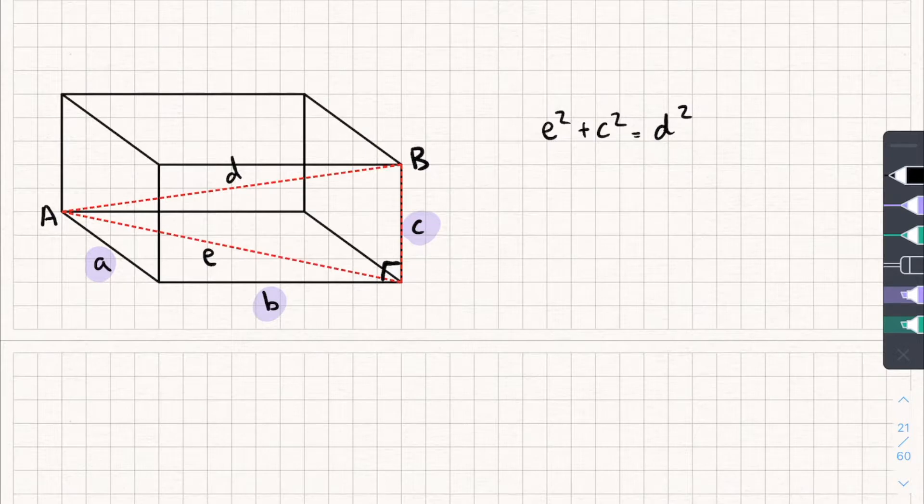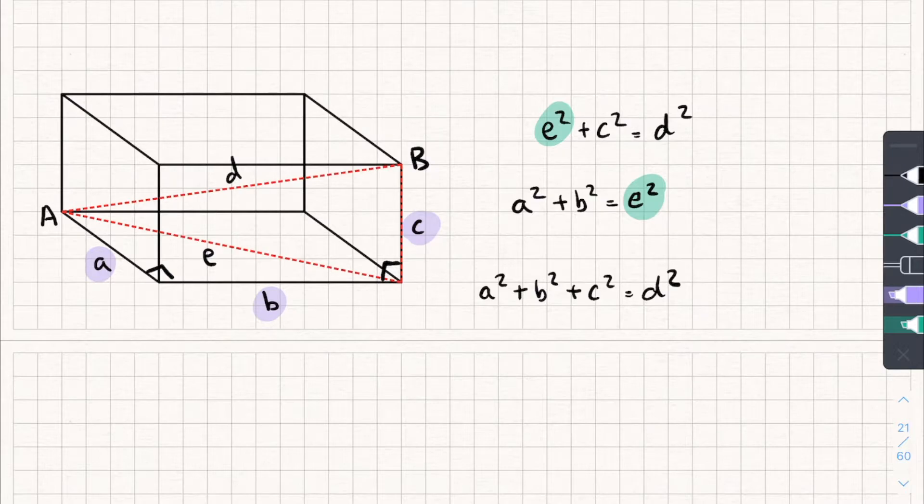But I don't know length E. So how could I work it out? Well, you may have noticed this is also a right-angle down there, and I could use sides A and B to find the length of E, because I could do A squared plus B squared equals E squared. And if I know that A squared plus B squared equals E squared, then I can just substitute that into the top formula. So E squared is just equal to A squared plus B squared. So if I then add C squared, it will give me D squared. And this here is my 3D Pythagoras formula. So it's basically the same, it's just got another number in it, or variable in this case.